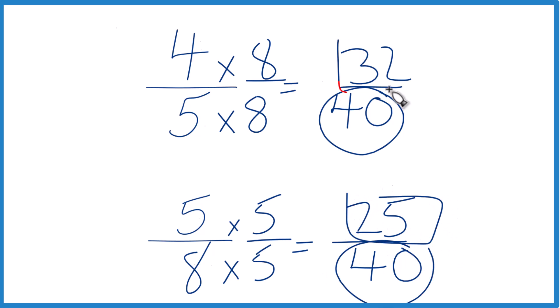We'll compare the numerators and we'll figure out if 4 fifths is greater than, less than, or equal to 5 eighths. 32 is greater than 25. So 32 fortieths, that's greater than 25 fortieths by, well, 32 minus 25 is 7. So by 7 fortieths.